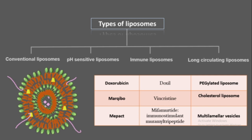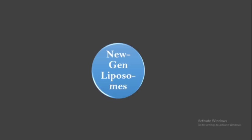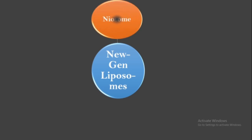Several new-generation forms of liposomes have been developed, like neosomes. These neosomes are made of non-ionic surfactants and also have cholesterol incorporated between the bilayers, making them less prone to breakdown by bile salts, thereby enabling them to reach the target site without being disintegrated along the pathway.